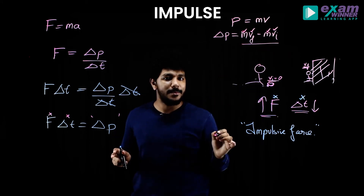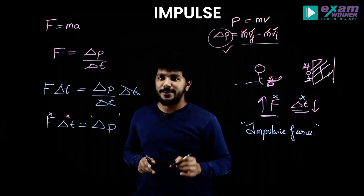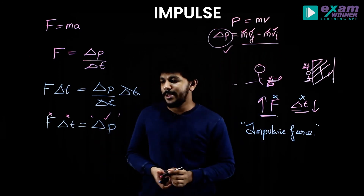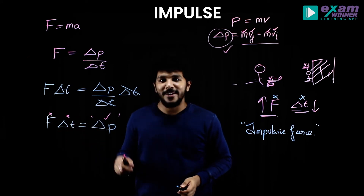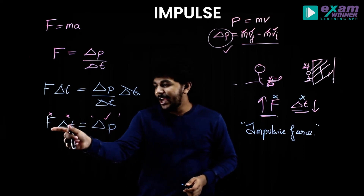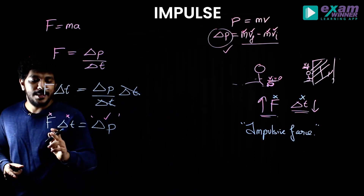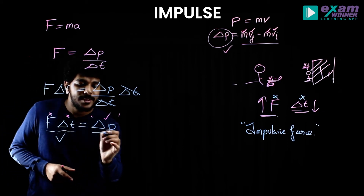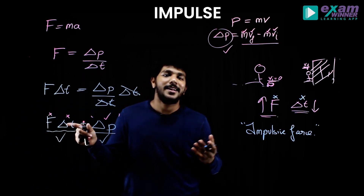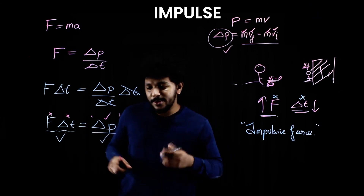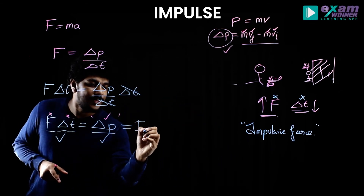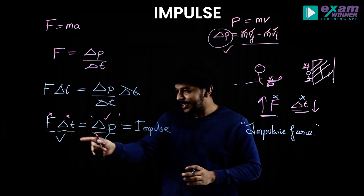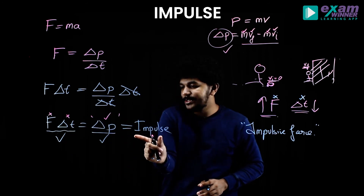In terms of the equation, we calculate all the terms. Delta-p, initial velocity, and final velocity are all part of the same calculation. F times delta-t — that is impulse — equals delta-p. Impulse will be equal to F into delta-t, and that impulse will be equal to change in momentum.